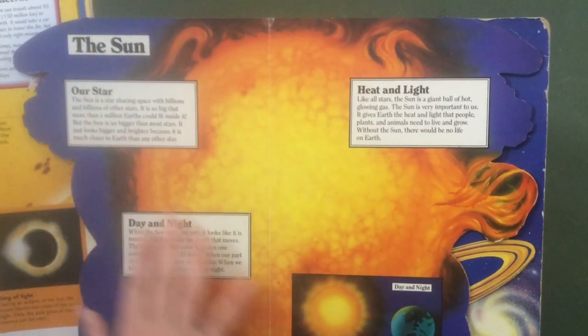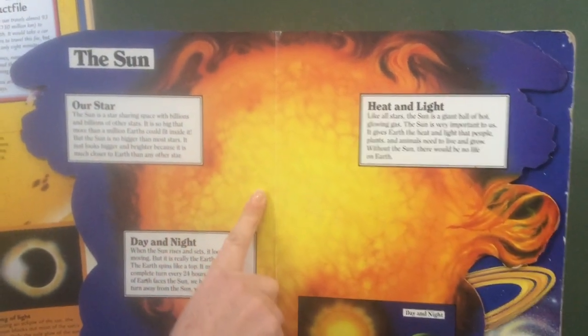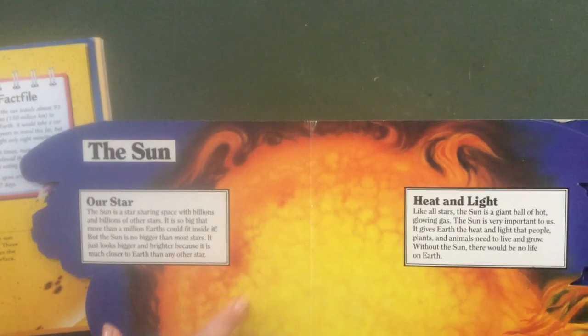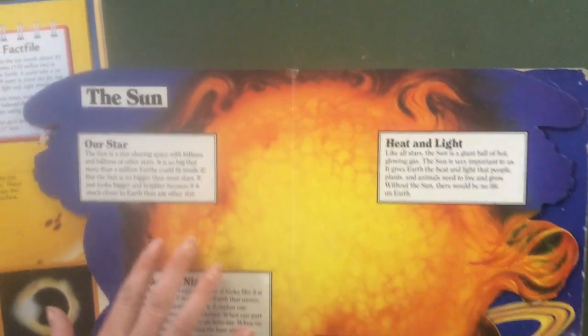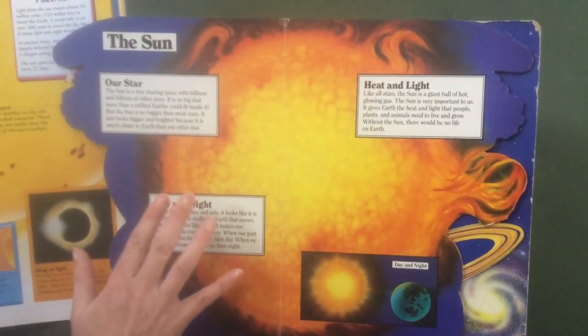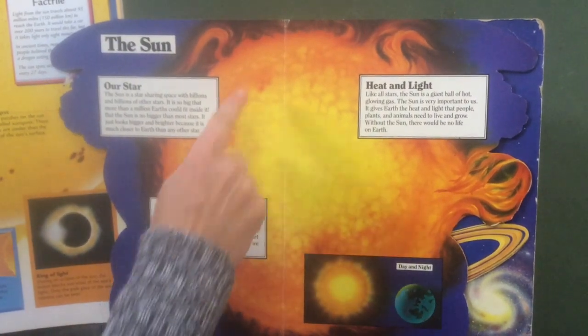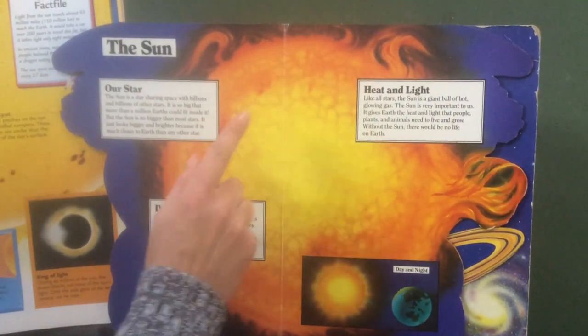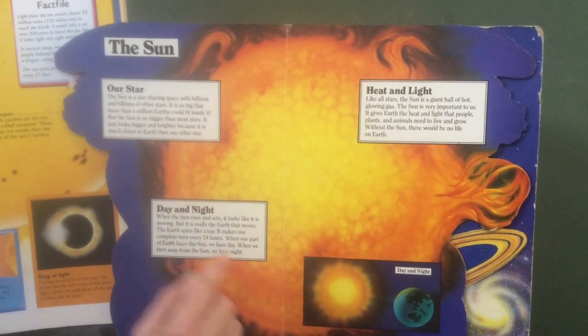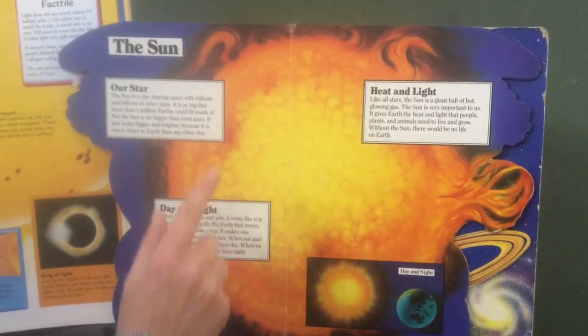And this sun is one of the stars sharing space with billions and billions of other stars. It is so big that more than a million earths could fit inside it. You can fit more than a million earths inside here. Can you believe that?